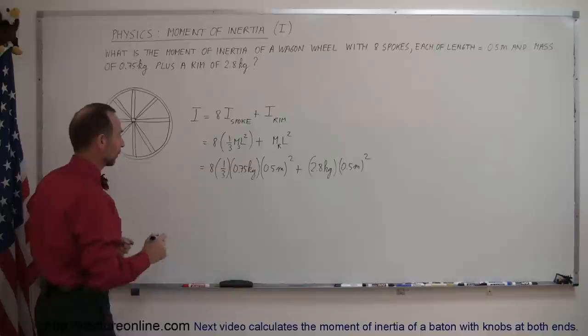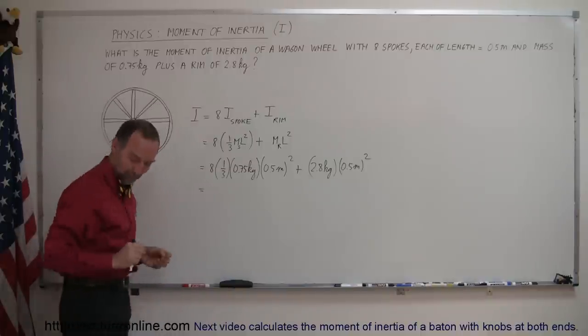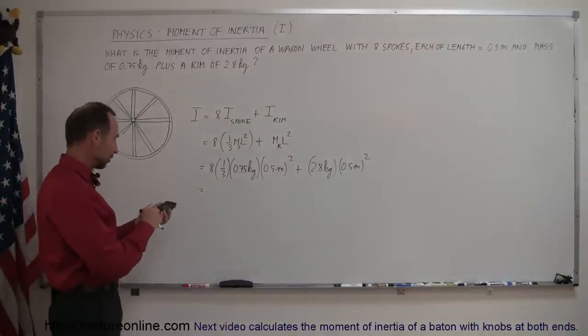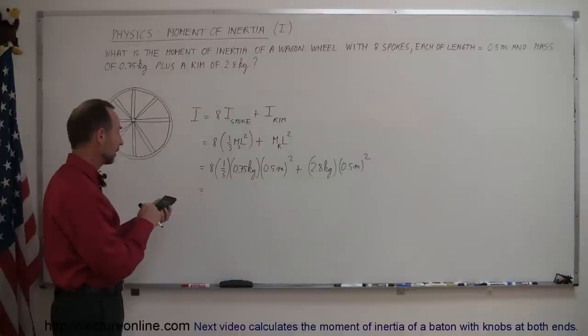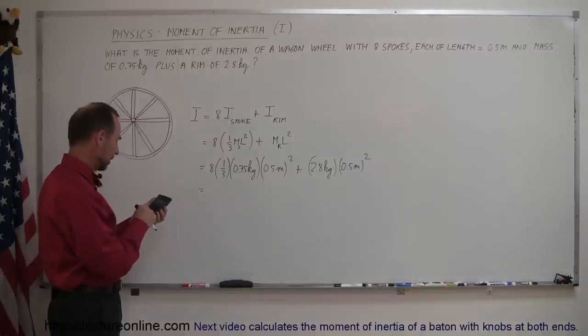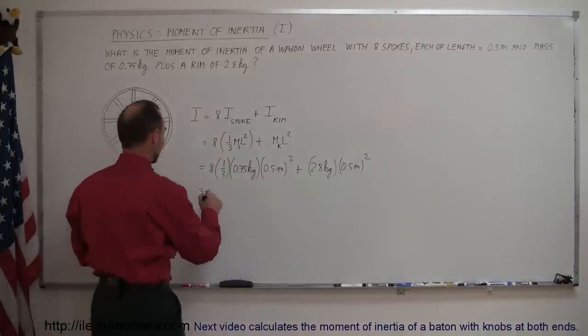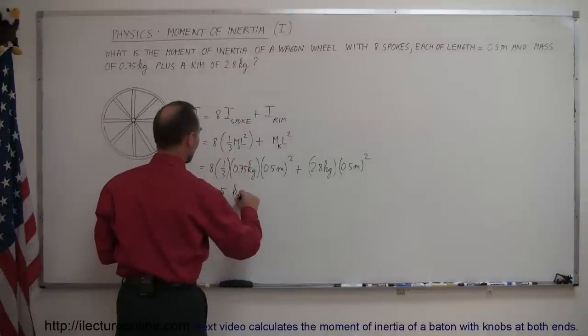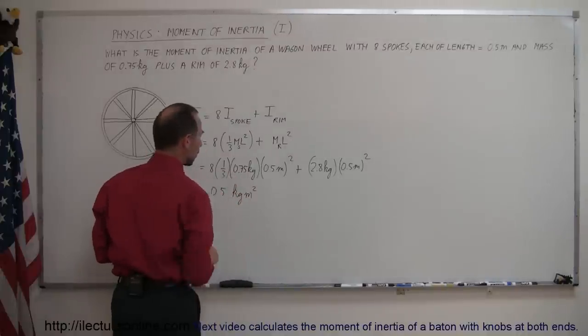All right, now working this out, I think I'm going to grab my calculator here. It's always handy to have one of these close by. So we have 0.5 squared times 0.75 divided by 3 times 8 equals, so that is equal to 0.5. Now units is kilograms meters squared, which are the units for moment of inertia.